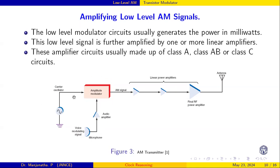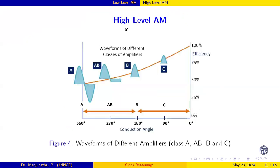Here we have a microphone, audio amplifier, and the signal is modulated. This signal is usually in millivolts — we can't directly transmit it through the antenna, so we need power amplifiers: two to three stages of power amplifier, with the final one being the final RF power amplifier. In most practical cases, these RF power amplifiers are class C amplifiers.